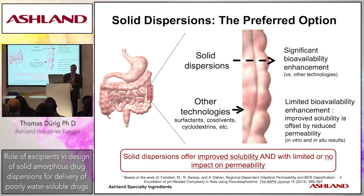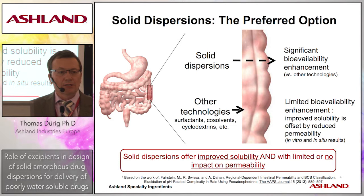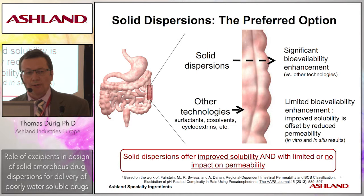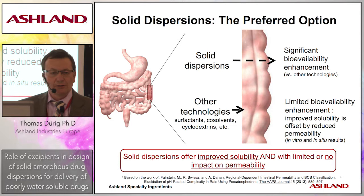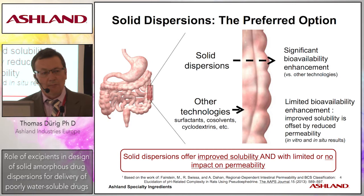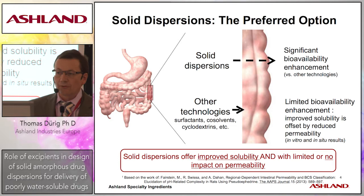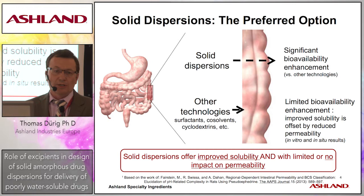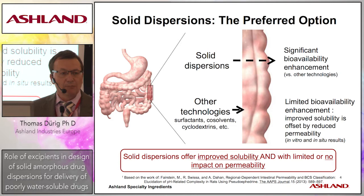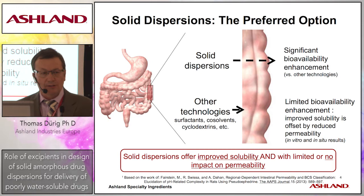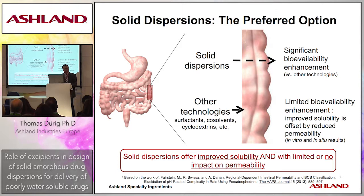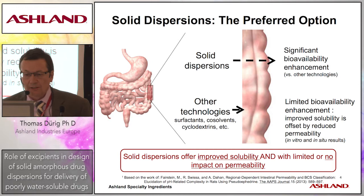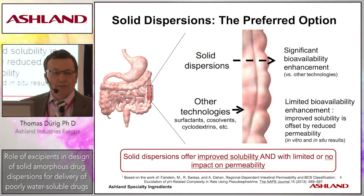Amorphous dispersions tend to increase solubility because the API will be in a metastable, energetically higher state than in crystal form. But there's an additional reason why amorphous solid dispersions are often selected: permeability. When applying a solubilization technology, it's not just that the API has to dissolve in the gastrointestinal fluids — it also has to permeate across the gastrointestinal mucosa. Amorphous dispersions often have significant advantages here over surfactants, co-solvents, and cyclodextrins, because those technologies keep a high affinity for the API, competing with partitioning into the mucosa.